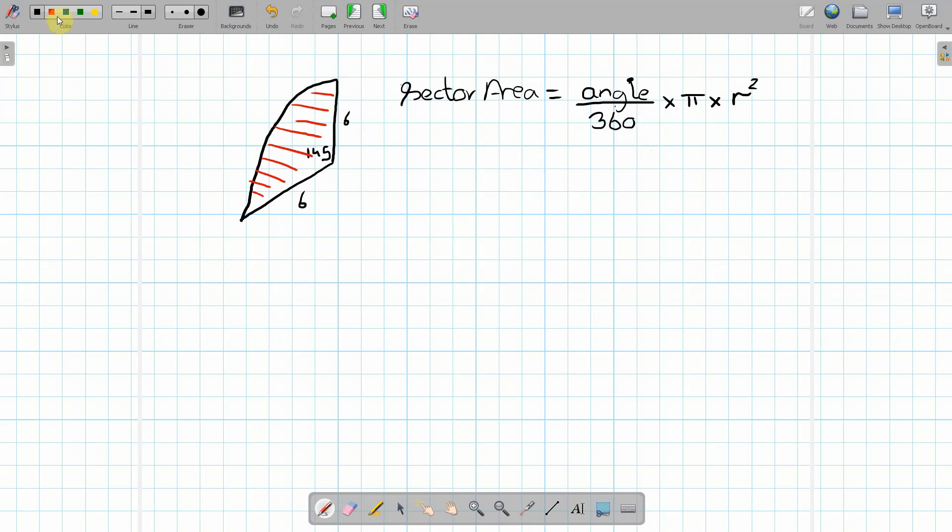So we know the angle, which is 145 degrees, and we know the radius, which is 6. So if we plug these numbers in, then we get 145 divided by 360 times by pi times by 6 squared. So if we plug this into the calculator, 145 divided by 360 is 0.4027 times by pi times by 36. And then if we put that into the calculator again, we get 45.55. And this time the units are in centimeters squared. And that is your final answer.